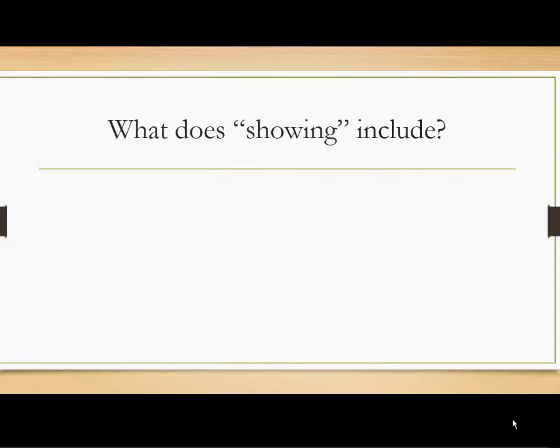So what does showing include? Well, spatial relationships, that is, defining how two different objects or characters are related to one another spatially. For instance, she sat so close to him that she could feel his breath on her neck.